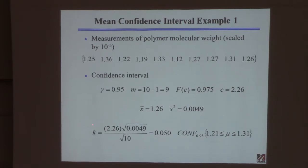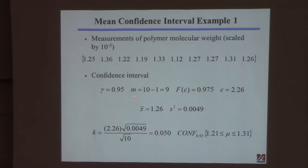Then I calculate the value k: take the c value, multiply by s (not s-squared, so take the square root), then divide by the square root of the number of samples n. Then the 95% confidence limits are x̄ minus k for the lower limit and x̄ plus k for the upper limit.